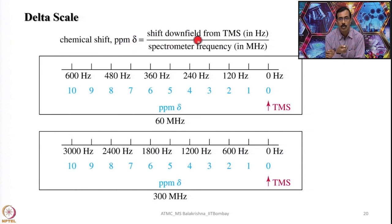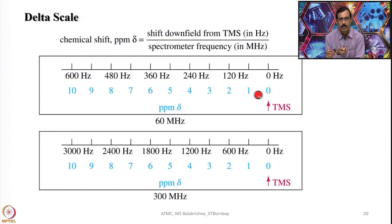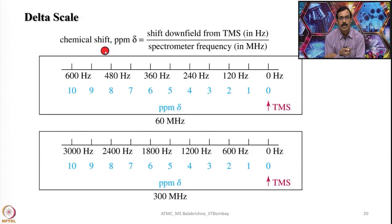The delta scale: chemical shift in ppm (δ) is the ratio of the shift downfield from TMS in Hz divided by the spectrometer frequency. Writing δ implies ppm, and writing ppm implies δ scale — no need to write both. For example, at 600 MHz a shift of 6000 Hz gives δ = 10, and at 60 MHz a shift of 600 Hz also gives δ = 10. This way the NMR signal value remains constant regardless of the magnetic field used for measurement.